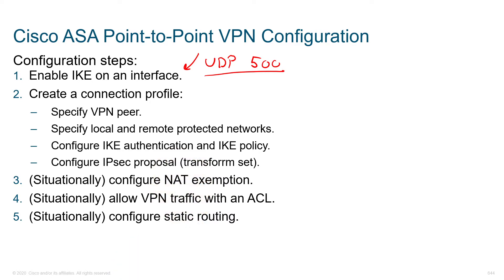Assuming that IKE is enabled because we do want to perform VPNs, we can create a connection profile. This is where we'll specify the VPN peer, identify traffic that should be protected — both the local network trying to access the remote network. We can configure our IKE authentication, pre-shared keys or digital certificates, as well as our IKE policy. When we configure the IPSec proposal, this holds our transform set, which specifies how we want to protect the identified traffic.